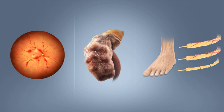Diabetes mellitus is characterized by recurrent or persistent high blood sugar, and is diagnosed by demonstrating any one of the following: fasting plasma glucose levels ≥7.0 mmol/L (126 mg/dL); plasma glucose ≥11.1 mmol/L (200 mg/dL) 2 hours after a 75-gram oral glucose load as in a glucose tolerance test; symptoms of high blood sugar and casual plasma glucose ≥11.1 mmol/L (200 mg/dL); or glycated hemoglobin (HbA1c) ≥48 mmol/mol (6.5% DCCT). It is preferable to measure a fasting glucose level because of the ease of measurement and the considerable time commitment of formal glucose tolerance testing, which takes two hours to complete and offers no prognostic advantage over the fasting test.